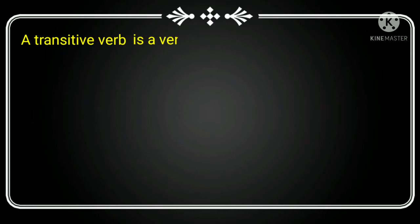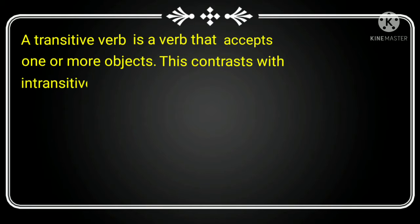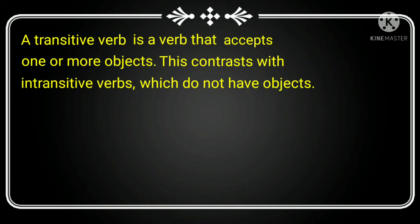A transitive verb is a verb that accepts one or more objects. This contrasts with intransitive verbs, which do not have objects.